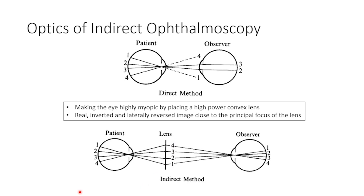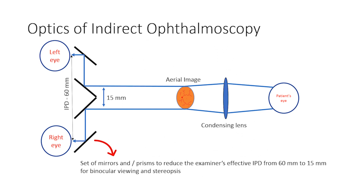In the direct method, the rays of light emerging from the periphery are not reaching the examiner's eye. But in the indirect method, because of the condensing lens, the peripheral rays of light are also brought to focus at the plane of the aerial image, thus enabling peripheral viewing of the retina. In a binocular indirect ophthalmoscope, the optics convert the examiner's interpupillary distance of approximately 60 mm to 15 mm using a set of mirrors, and this allows for stereopsis as both eyes simultaneously perceive a slightly different area of the aerial image.